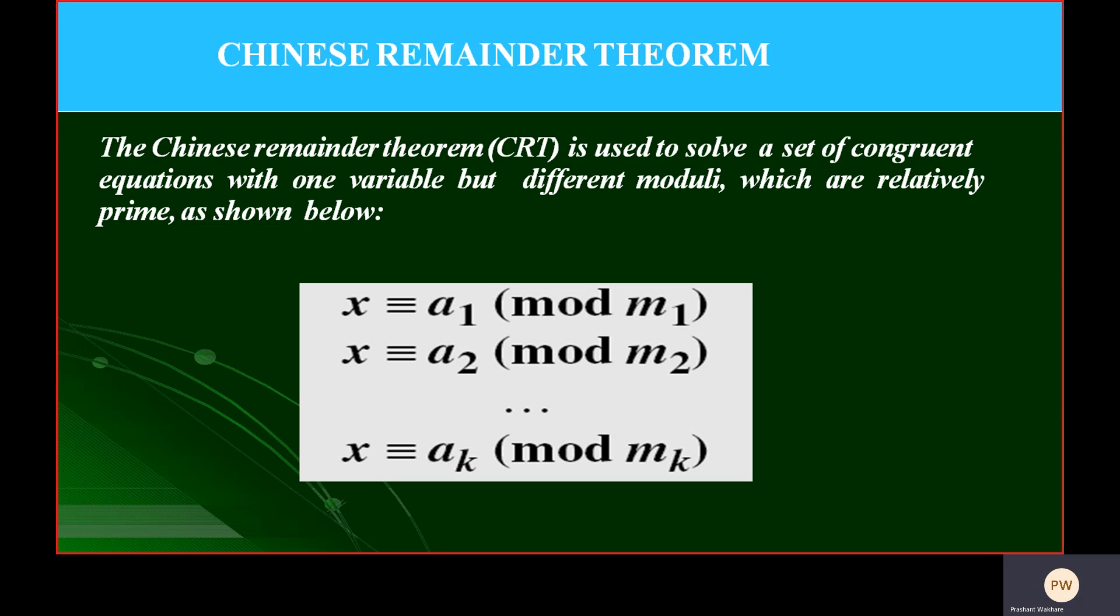If you see in these given equations, there is X congruent, this symbol is the congruent symbol, A1 mod M1, X congruent A2 mod M2, up to X congruent AK mod MK. If you see, you will realize one thing in these given equations: